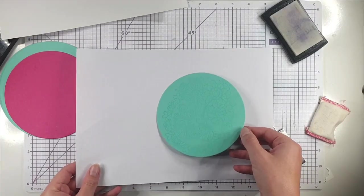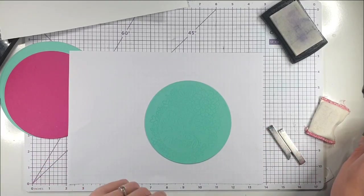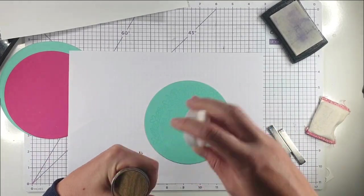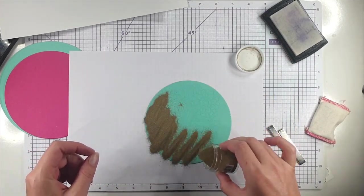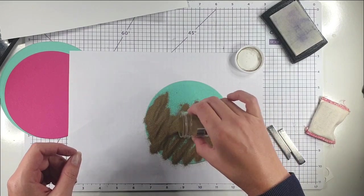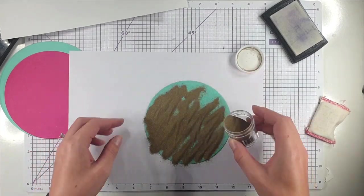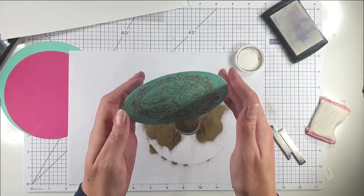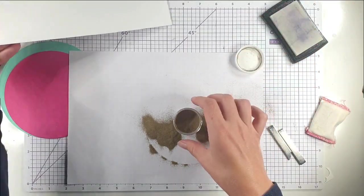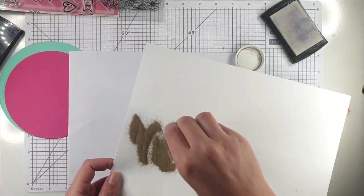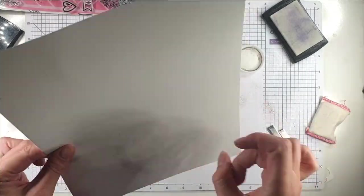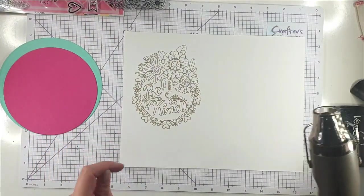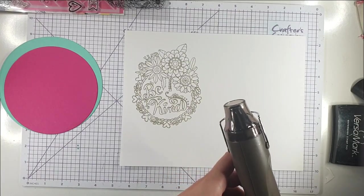I'm going to pour gold embossing powder over this - I'm using the Antique Gold embossing powder from Altenew because it's a really nice fine one. There's a lot of detail on this, so you want a nice fine embossing powder. While I'm at it, I'm going to do the white one as well. Then I'm going to use my heat tool to melt the embossing powder on both.